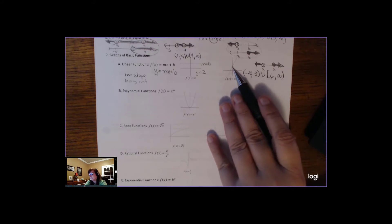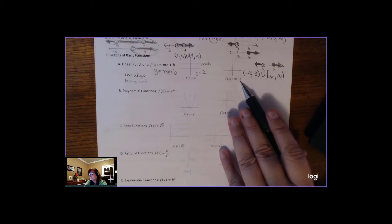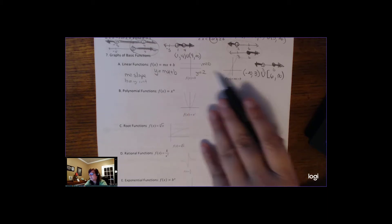That has some sort of slope, like a slope of 2, for example. Maybe a y-intercept of 3. But that's what linear functions look like.